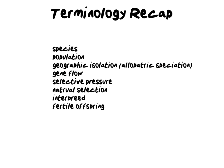Let's do a quick terminology recap. A species is a group of individuals that can reproduce with one another and produce fertile offspring. A population is a group of species found in the same place at the same time in the same habitat. We then looked at geographic isolation, also known as allopatric speciation — when a geographical barrier separates populations of the same species and results in a new species arising.